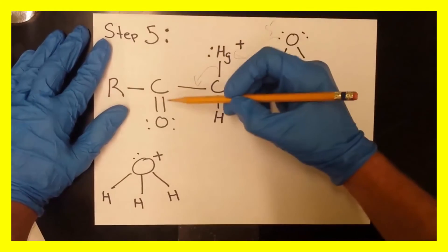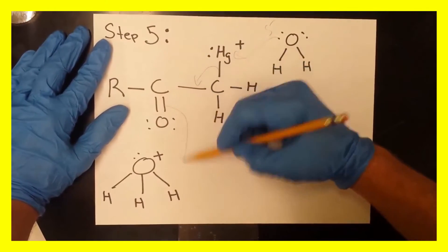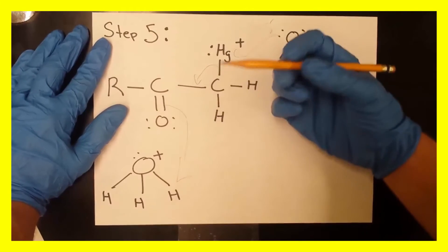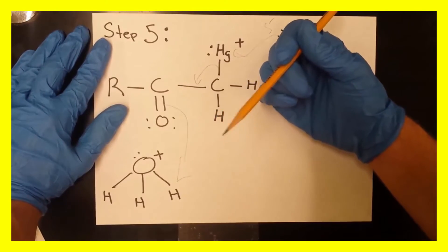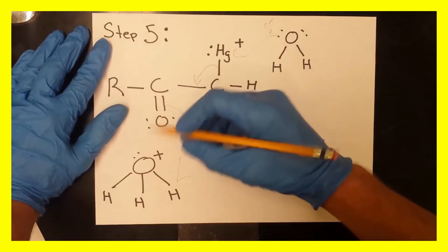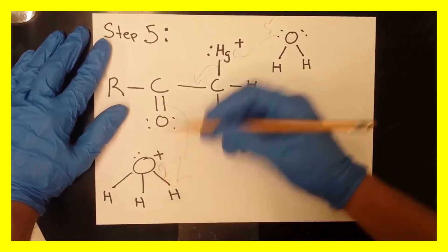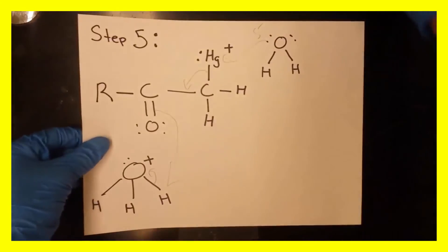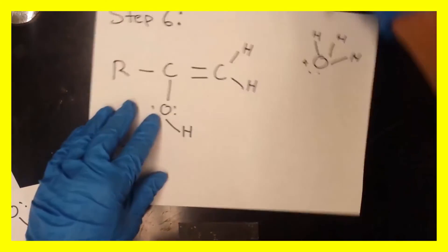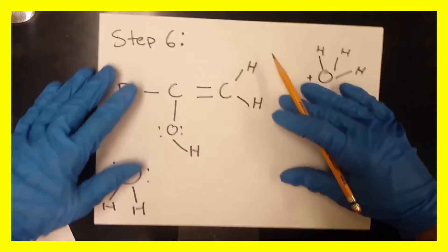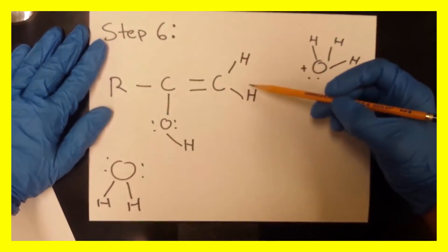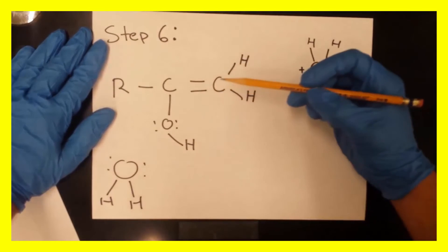And then this double bond will have to break, and it will attack one of the hydrogens off of the hydronium ion that was also previously formed by the removal of the H off of the alcohol to form this double bond here. So then that will happen forming water here. So now we're back to having an alcohol group and then two H's on this C and then a double bond.